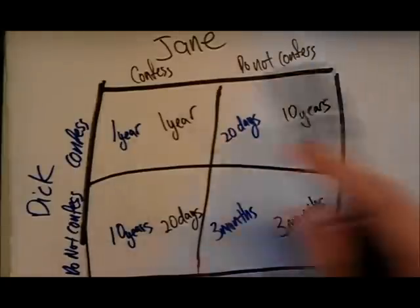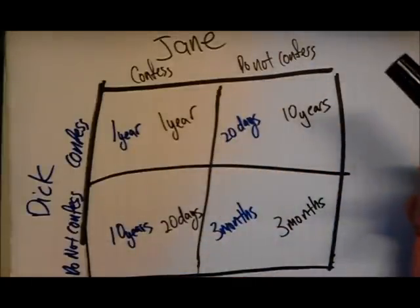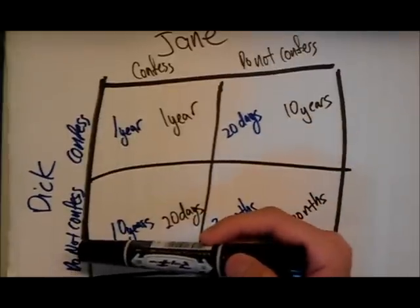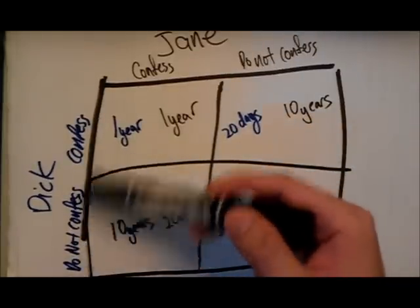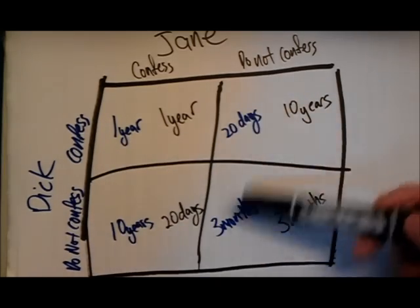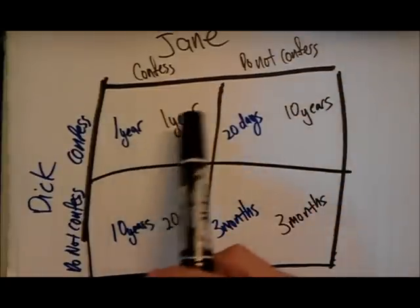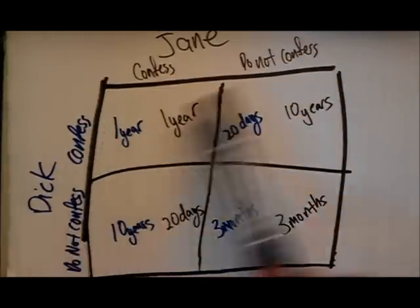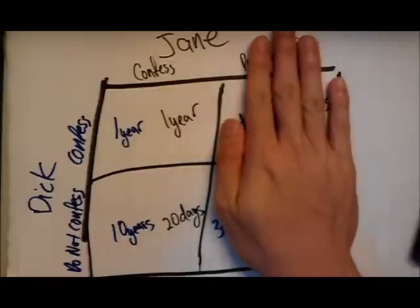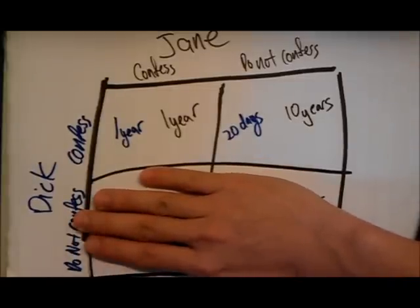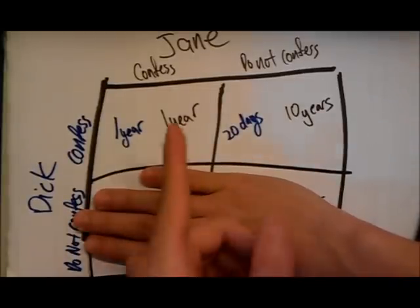This is called game theory. In this matrix, we can see the blue part shows Dick's actions as well as the consequences that he's going to get. Jane is shown in black. Let's go through one of these boxes. Let's say for Dick, he's got two choices. If he chooses to confess, and if Jane confesses as well, both of them are going to get one year in jail.